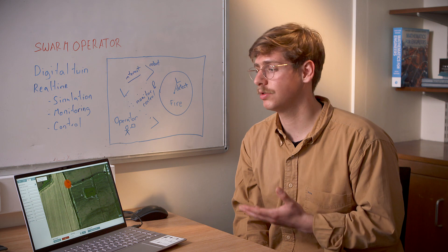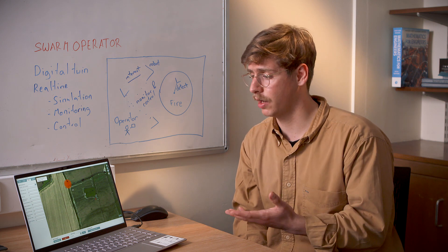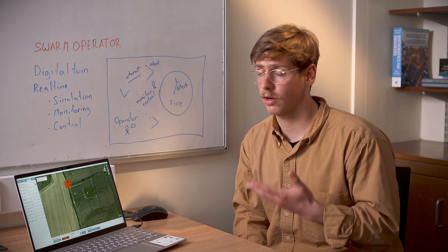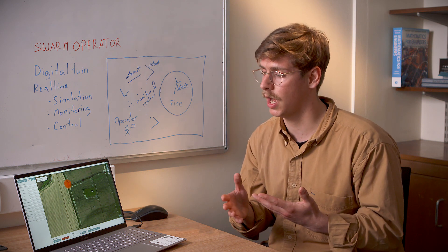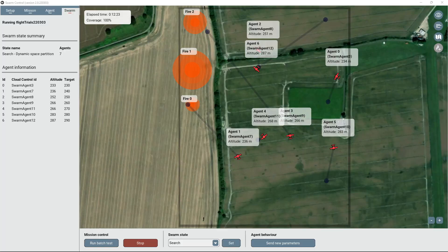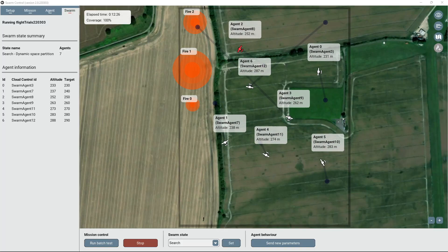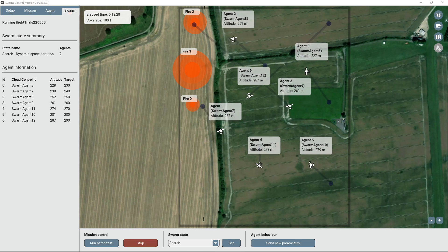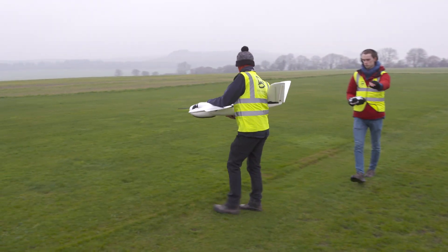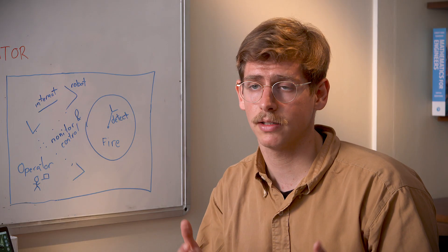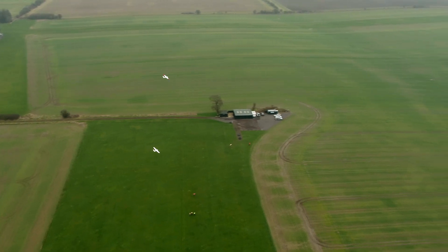Our digital twin allows the swarm operator to not only control real aircraft, but also create digital ones, which will essentially allow the operator to control a larger swarm with more aircraft, both virtual and real. After a successful launch, and after we've seen that the operator is able to change searching patterns and searching behaviours, we're also able to task our swarm to land.